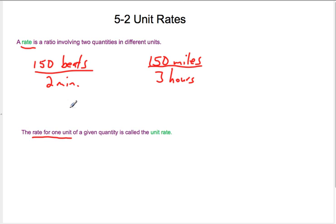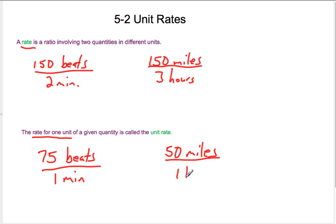So in this case, if we take the beats per minute, 150 beats per two minutes means 75 beats in one minute. So now we have the rate for one unit because there's one unit on the bottom. Or if we had 150 miles in three hours, that means 50 miles in one hour.